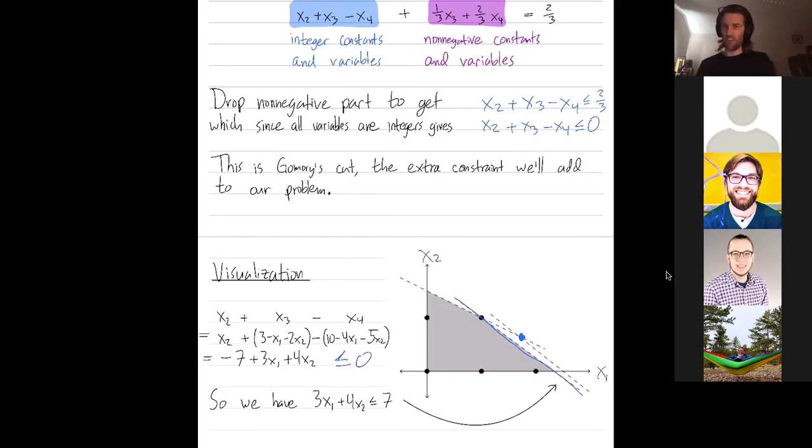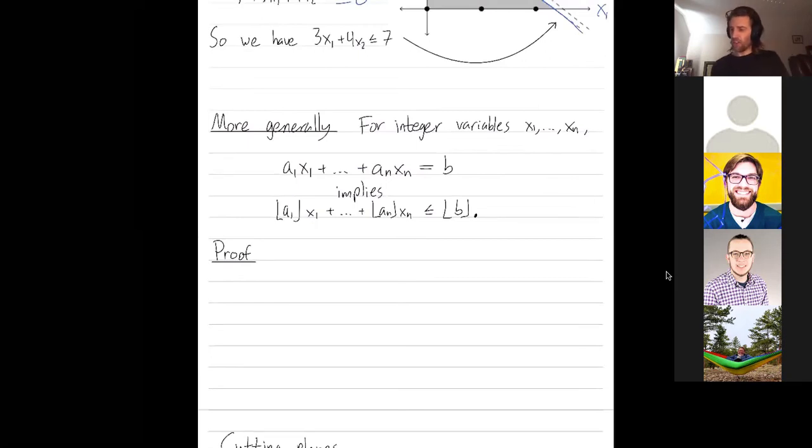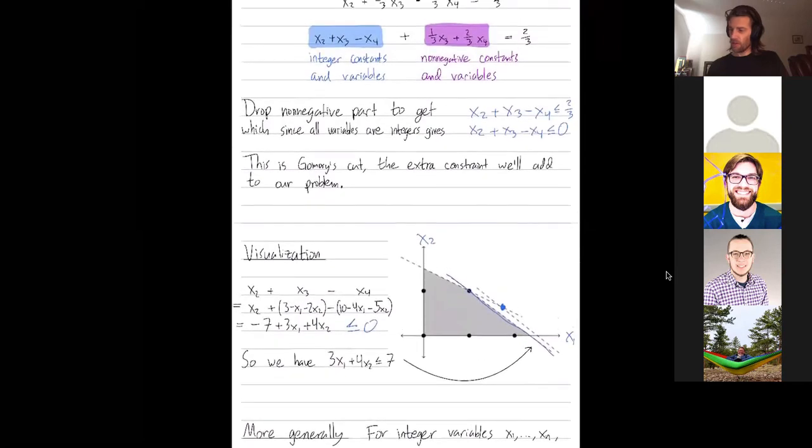So now you just solve this updated program here. I think in the next step when you solve this, you'd find the optimal integer solution. But in general, you'd have to add in more and more Gomory cuts to try to get better and better. Branch and bound, which we might talk about on Thursday, is one way to organize this search for finding good sequences of Gomory cuts to slim down your polytope or your feasible region as efficiently as possible. Let me end with one more comment and a summary.